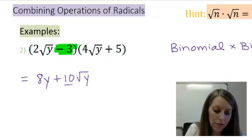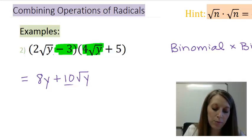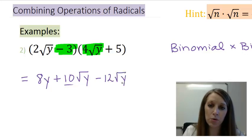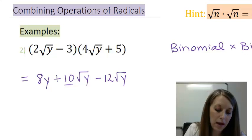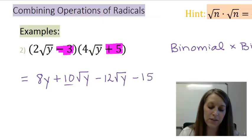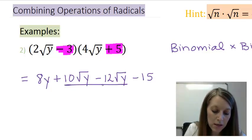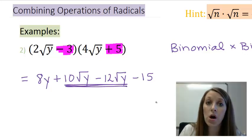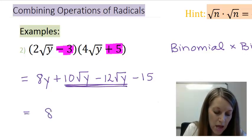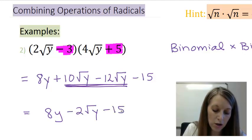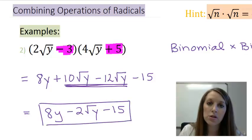Inside: (-3) × 4√y — multiply -3 × 4 = -12, copy down √y, giving -12√y. Last: (-3) × 5 = -15. Now combining the middle two terms, 10√y and -12√y are like terms: 10 - 12 = -2, so that gives -2√y. My final answer is 8y - 2√y - 15. I cannot go any further because there are no more like terms.